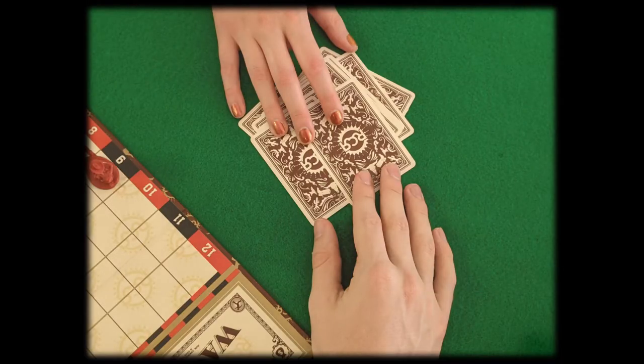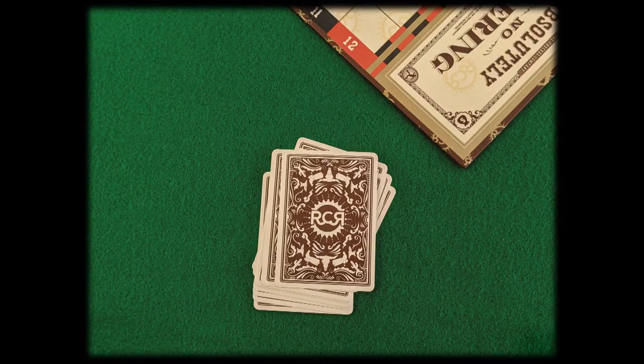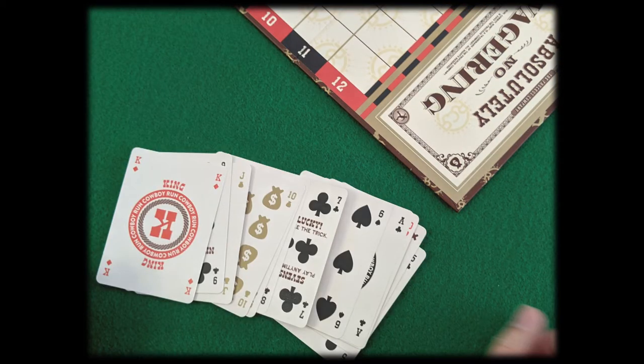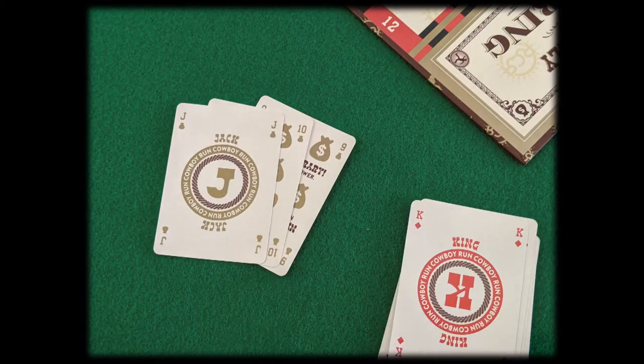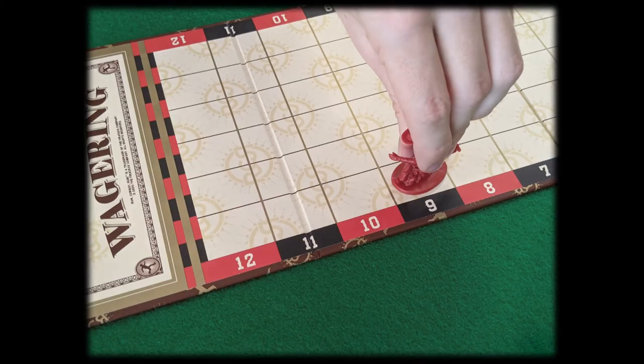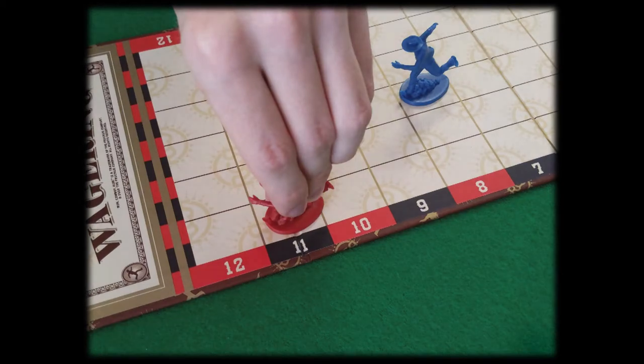First, all players discard their hands in the center of the table. These cards don't get counted. Then, each player counts up the number of gold-suited cards they have collected from taking tricks. For every gold-suited card they've collected, each player scores a point and moves their cowboy that many spaces down the track.